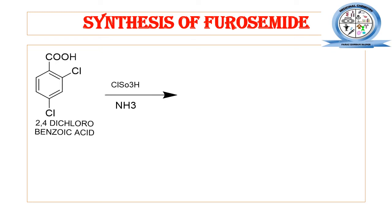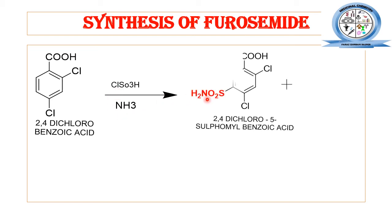Now let's look at the reaction mechanism involved in the synthesis of furosemide. The first step begins with 2,4-dichlorobenzoic acid — benzoic acid is benzene directly bonded with a carboxylic functional group, and when substituted at the second and fourth positions with chlorine, it becomes 2,4-dichlorobenzoic acid. This is reacted with chlorosulfonic acid and ammonia to give 2,4-dichloro-5-sulfonylbenzoic acid, incorporating the sulfonyl moiety at the fifth position.